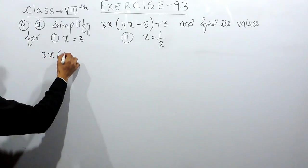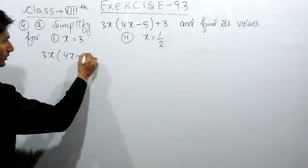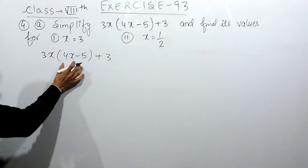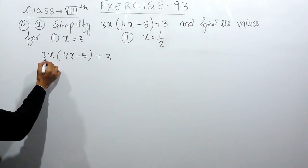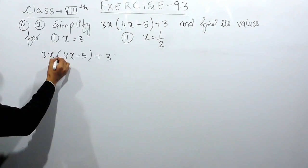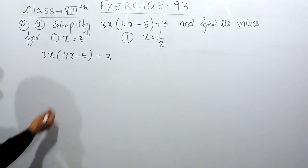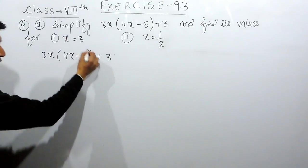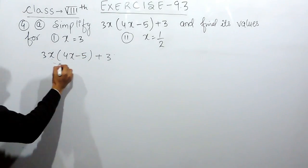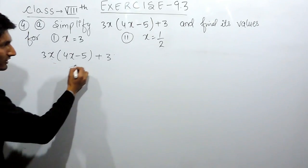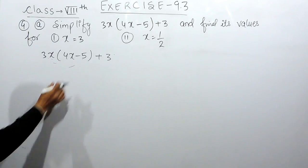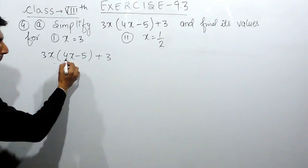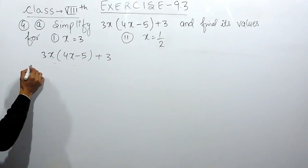The expression is this. First of all we have to open the bracket. For that we have to multiply this because whenever the bracket is there, it is considered multiplying. So 3x, when you have to open this bracket, you have to multiply 3x with 4x as well as with 5 because if there are two terms inside the bracket, you have to multiply this with both the terms.